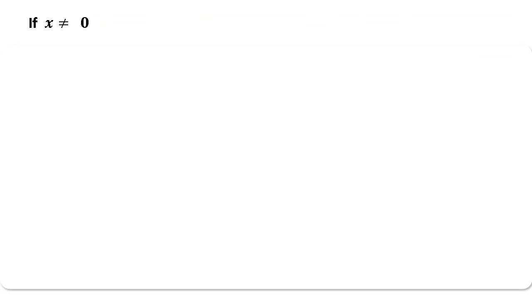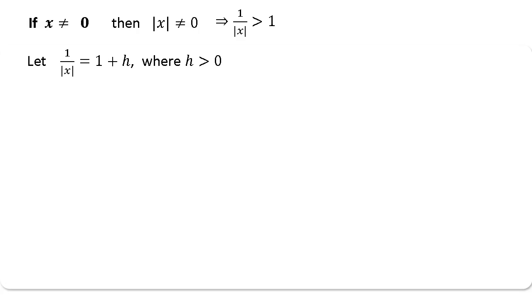Now the other sub-case: x ≠ 0. Then mod x is non-zero, and 1/|x| > 1. We write 1/|x| = 1 + h, where h is some positive real number. This implies |x| = 1/(1+h), and raising to power n: |x^n| = 1/(1+h)^n. Using binomial expansion to expand the denominator, after simplifying nC1, nC2, and so on, you get the expanded form.